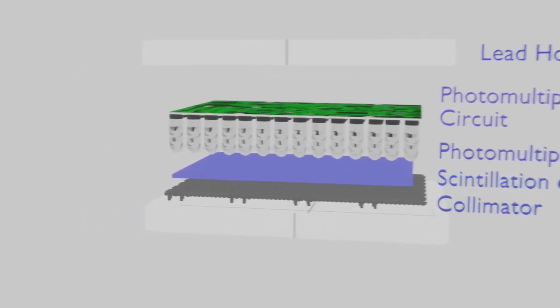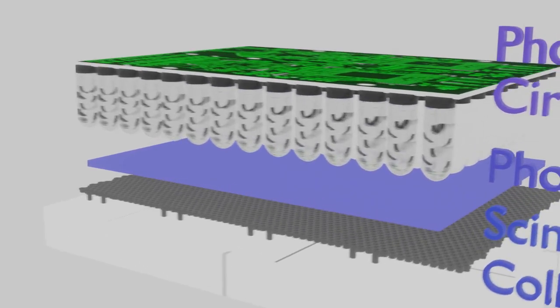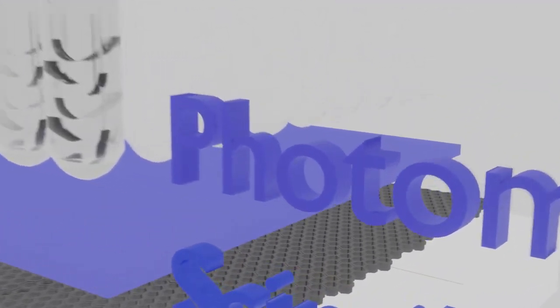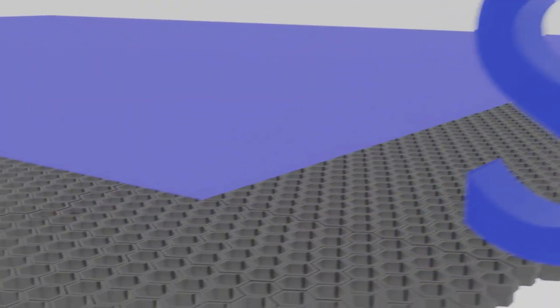Let's look into the components of a gamma camera. The major components in a gamma camera are the collimator, a large area scintillation crystal, a light guide, and an array of photomultiplier tubes.